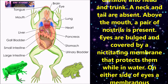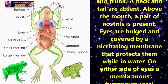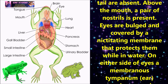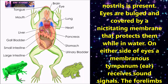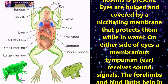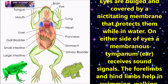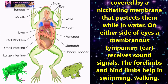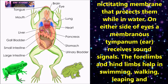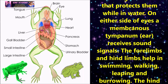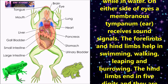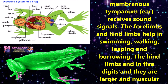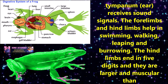Eyes are bulged and covered by a nictitating membrane that protects them while in water. On either side of the eyes, a membrane called the tympanum receives sound signals.